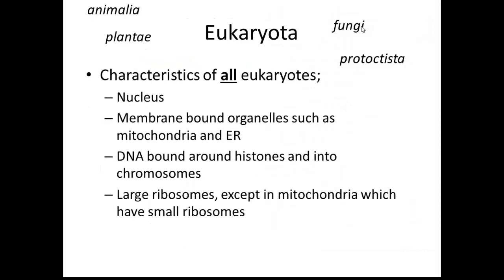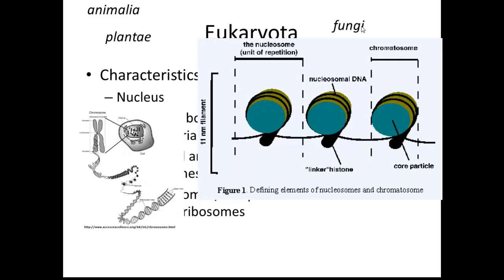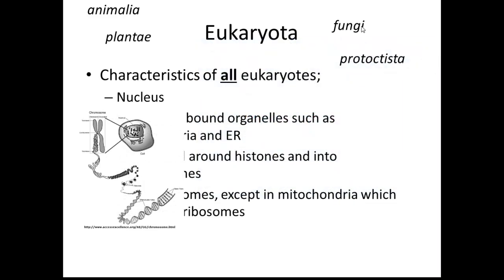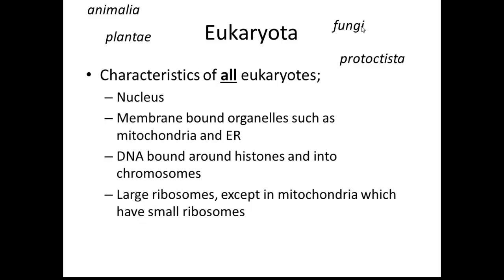Prokaryota sit aside from eukaryota — the other four kingdoms are all eukaryotes. Eukaryotes have a nucleus, though not every cell always retains one — red blood cells, for example, are eukaryotic cells which lose their nucleus, though they did have one at one stage. They have membrane-bound organelles such as mitochondria, endoplasmic reticulum, chloroplasts, and the Golgi apparatus. Their DNA is bound around histones and into chromosomes, except the DNA inside mitochondria or chloroplasts. They have large ribosomes, again except in mitochondria which have small ribosomes.